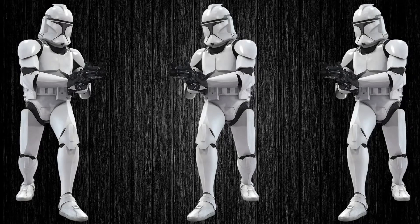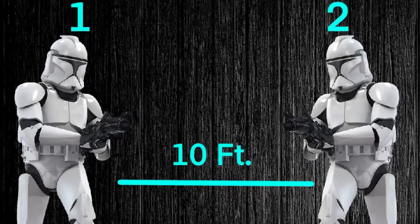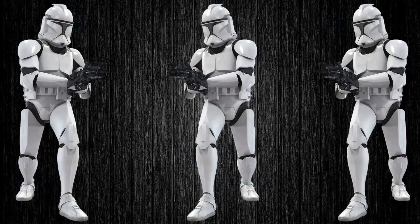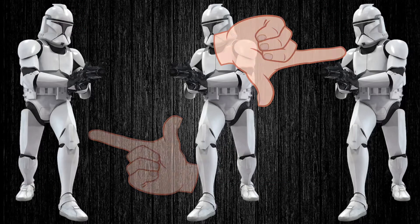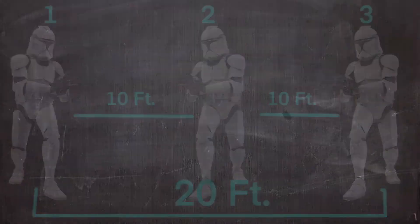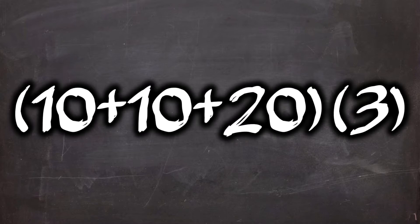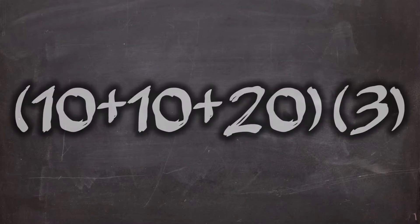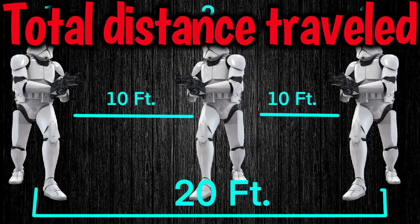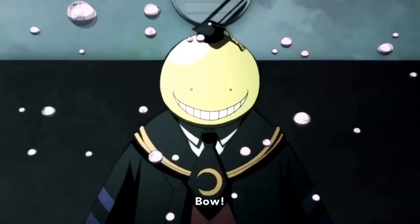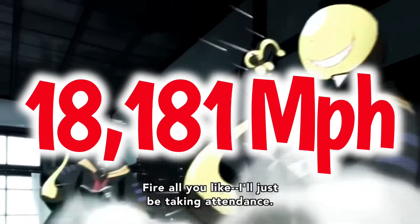Moving up to 3 high-quality clones, we have to measure the distance between all the clones relative to each other. Clone 1 and 2 are 10 feet apart, clone 2 and 3 are also 10 feet apart, but then we need to factor the distance between clone 1 and 3, which gives us 20 feet. Plugging all these numbers into the formula, we get 10 plus 10 plus 20, times 3. Adding and multiplying all these together, we find the total distance the individual moved faster than can be tracked is 120 feet. This would raise their speed up to Mach 23, or 18,181 miles per hour.